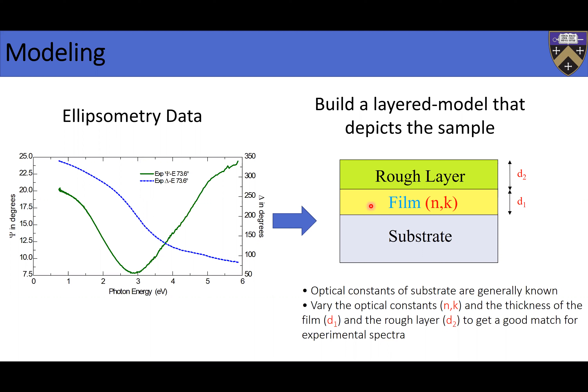To construct a model, you need to know your layer structure. If you have six different layers, you have to have six different layers in your model. What you want to walk away with are the N and K values, plus the thicknesses of your layers. That's the idea of modeling. It takes a little bit of experience to do this modeling, because you can always find a solution that may be incorrect — it takes seeing hundreds and thousands of these to figure out the right one.